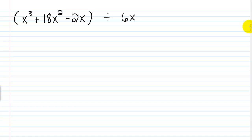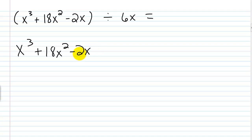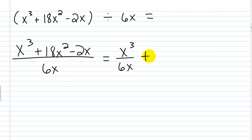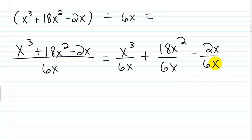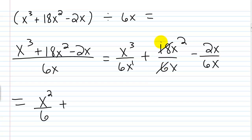Next example: (x³ + 18x² - 2x) ÷ 6x. Writing in fractional form and splitting up: x³/6x + 18x²/6x - 2x/6x. For x³/6x, the quotient rule for exponents gives x^(3-1) = x², so we get x²/6. For 18x²/6x, the 18 and 6 cancel to give 3, and x²/x = x, giving 3x. For 2x/6x, the x's cancel completely, leaving 2/6 = 1/3.